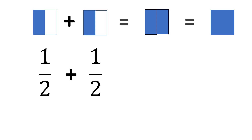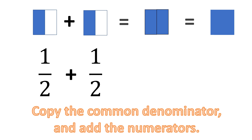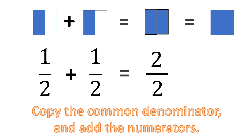How to solve this without the figures? We follow the rule for adding fractions: we copy the common denominator and add the numerators. 1 plus 1 is 2, so now we have 2 over 2. How did we get 1? We divide 2 by 2, which equals 1. As long as it can be reduced to lowest form, we always do that.